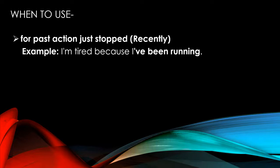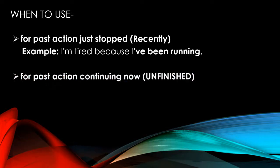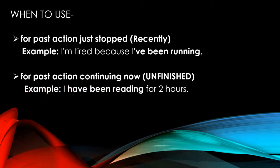Next, for past actions continuing now. That means an unfinished work which started in the past and you are still doing it. That time you will use present perfect progressive tense. Example: 'I have been reading for two hours.' That means you started reading two hours ago and you are still continuing it. That's why you are going to use this tense.